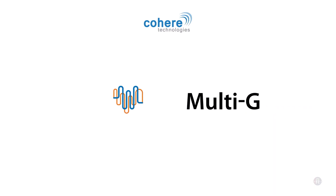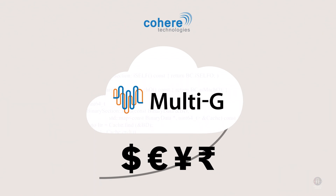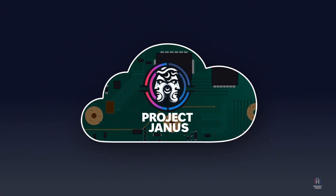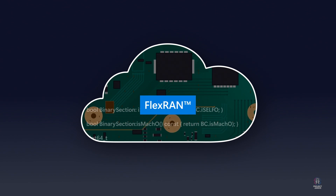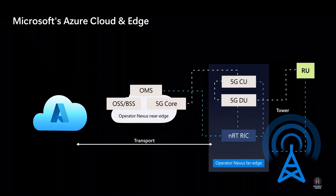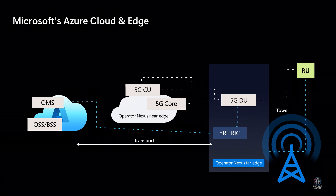As mobile operators seek a return to profitability, distributed cloud, multi-G networks and programmability have all emerged as possible tools to innovate cost structure and create new services. The combination of Azure's dynamic global platform, Janus technology and multi-G's spectral efficiency and waveform coexistence are explored. The industry is moving from today's appliance model to open RAN, and Microsoft's Azure Telecom Cloud enables deployments aligned with the operator Nexus Far Edge service.